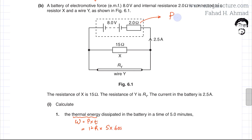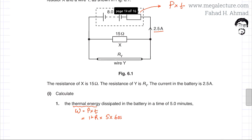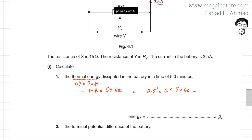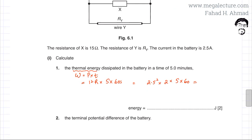We calculate power × time: the current is 2.5 amperes, so it's 2.5 squared multiplied by the internal resistance of 2 ohms, multiplied by 5 × 60 seconds. This gives the total energy dissipated in 5 minutes, which comes out to be 3,750 joules — the answer is approximately 3,750 joules.